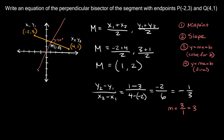We know the slope of this perpendicular bisector line, and we also know one point it passes through — the midpoint at (1, 2). We'll use both of those to move to step 3: using the slope-intercept formula y = mx + b to solve for b.